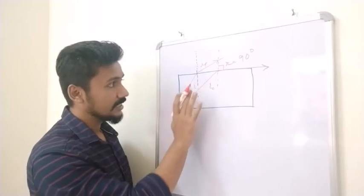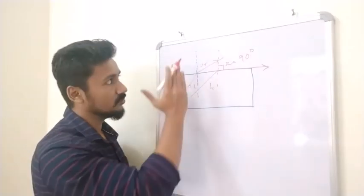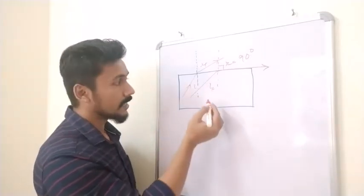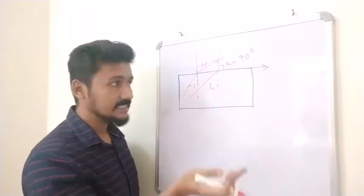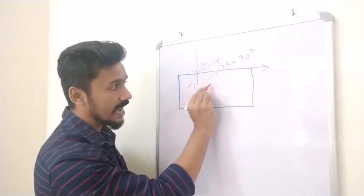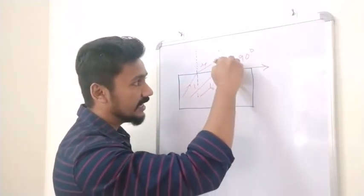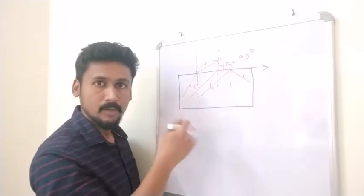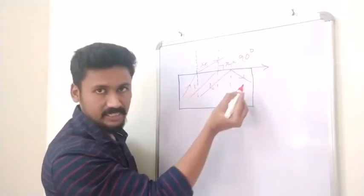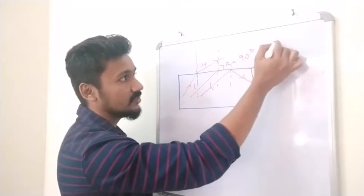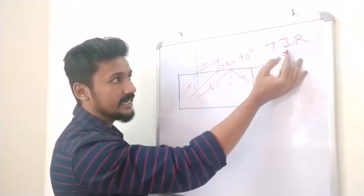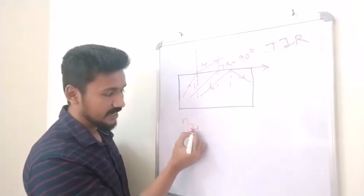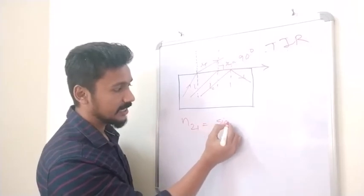This only happens when light passes from a denser to a rarer medium — not the other way around. If the angle of incidence exceeds the critical angle, the light cannot refract out; it gets totally reflected back inside. This is called Total Internal Reflection. The refractive index of medium 1 with respect to medium 2 equals 1/sin(ic).